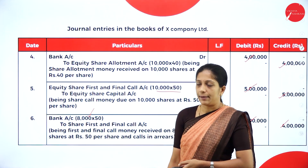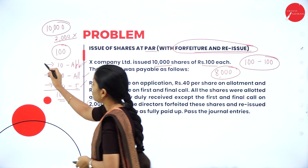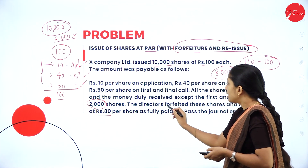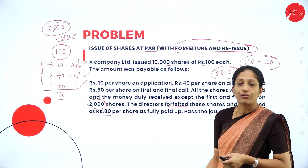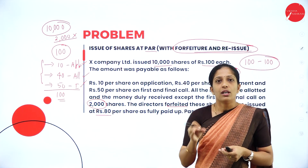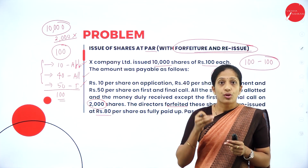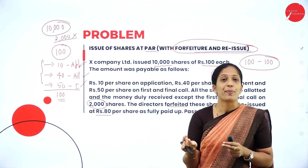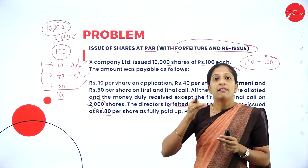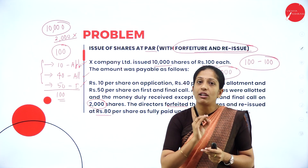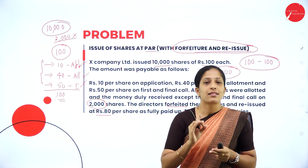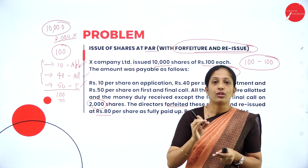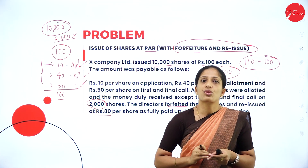Now, since 2,000 shareholders did not pay, the directors forfeited those shares. Forfeiture means the cancellation of those shares for not paying either allotment money or first and final call money. Those 2,000 shares on which first and final call money was not paid will be cancelled — that is known as forfeiture.